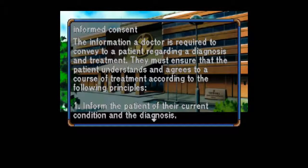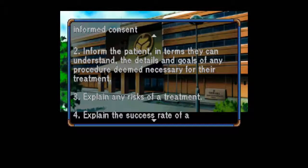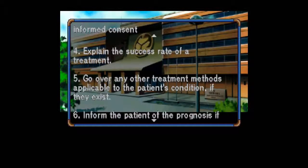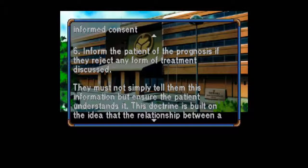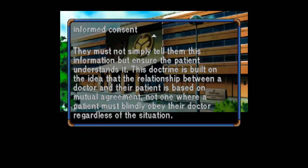Make sense? Informed Consent: The information a doctor is required to convey to the patient regarding a diagnosis and treatment. They must ensure the patient understands and agrees to a course of treatment according to the following principles: 1. Inform the patient of their current condition and the diagnosis. 2. Inform the patient in terms they can understand the details and goals of any procedure. 3. Explain any risks of a treatment. 4. Explain the success rate. 5. Go over any other treatment methods applicable. 6. Inform the patient of the prognosis if they reject any form of treatment. They must ensure the patient understands. This doctrine is built on the idea that the relationship between a doctor and patient is based on mutual agreement, not one where a patient must blindly obey their doctor.